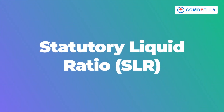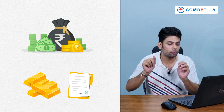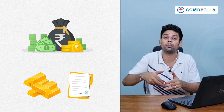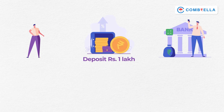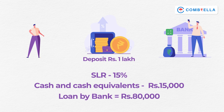The next method is Statutory Liquid Ratio — SLR. SLR is similar to CRR, but there is a small difference. All banks have to maintain a portion of the deposits in cash and cash equivalents. Cash equivalents means which is easily convertible into cash, like gold, government bonds, securities, etc. So let's say you deposit 1 lakh rupees in a bank account. And the SLR set by the RBI is 15%, which means the bank has to keep 15,000 in the form of cash and cash equivalents. And the balance money — 80,000 — can only be lent by the banks, since 100 minus 5% CRR minus 15% SLR equals 80%.